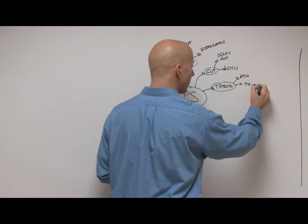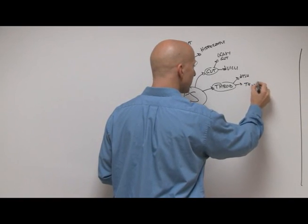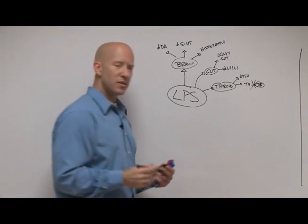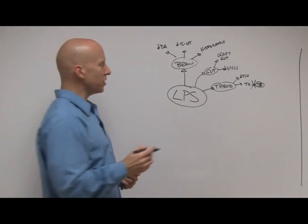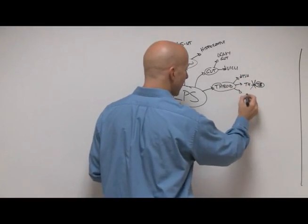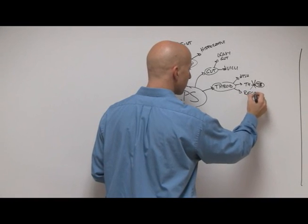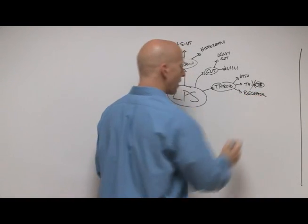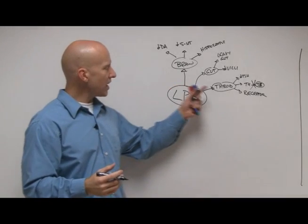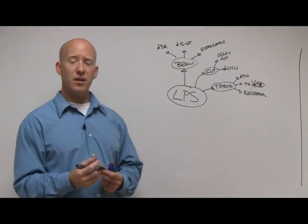T4 is an inactive thyroid hormone that's converted to T3, which is active. Lipopolysaccharides has been shown to decrease the conversion of T4 to T3. And lastly, it actually acts on the receptor sites for thyroid hormone itself. So even if you had adequate amounts of thyroid hormone, you can't get it into the cells.